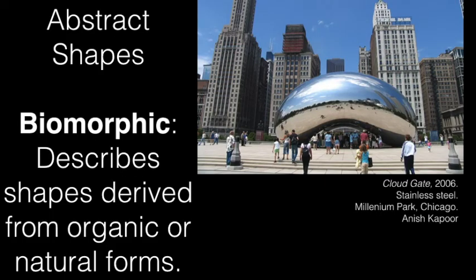Different types of abstract forms. Biomorphic describes shapes derived from organic or natural materials. We have Cloud Gate by Anish Kapoor — an outdoor sculpture that lives in Millennium Park in downtown Chicago. Tons of people walk past it every day. It has a very reflective surface; you can walk under and around it, seeing the skyscrapers and people around you. It's also known lovingly as 'the bean.' It just feels like a smooth little seed or bean. Even though it has a futuristic shine, the shape itself is very organic and natural.